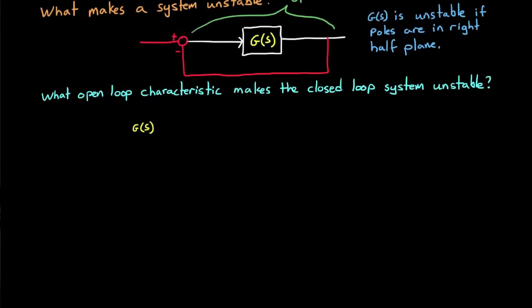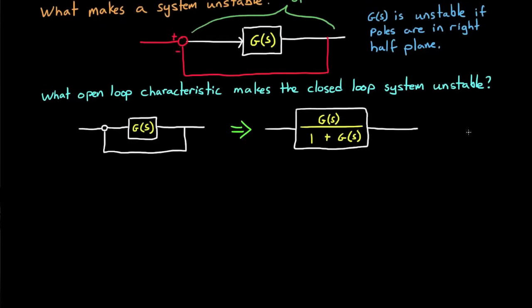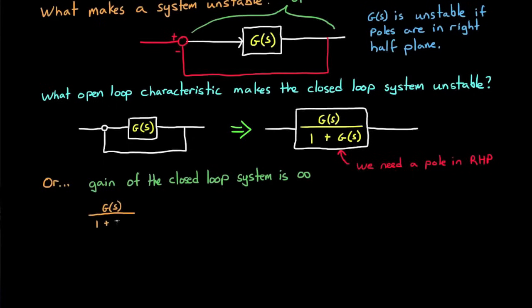So let's talk about what characteristics of the open-loop system creates an unstable closed-loop system. Let's once again start with an open-loop transfer function, g of s. And when we close the loop around this system with unity feedback, the closed-loop transfer function becomes g of s divided by 1 plus g of s. So for the closed-loop system to be unstable, we'd need a pole in the right half plane. But we can also think about it this way, an unstable system has a gain of infinity because unstable systems will grow unboundedly, which is infinite gain. In order for this transfer function to have a gain of infinity, the denominator needs to go to 0. And for that to happen, g needs to equal minus 1.